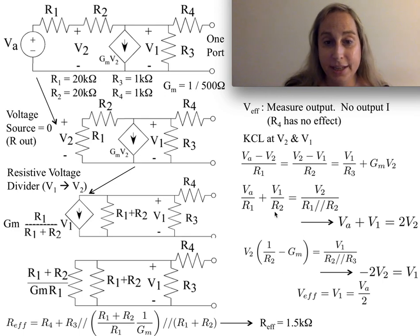If I actually take these and plug in the values we have, I find out that because R1 and R2 are equal, I get VA plus V1 equals 2V2. I also plug in the values here realizing GM is the key term, GM and R3 are the dominant terms. This gives me something that's approximately 2V2 which gives me V1. The net effect is my effective voltage V1 is effectively VA over 2.